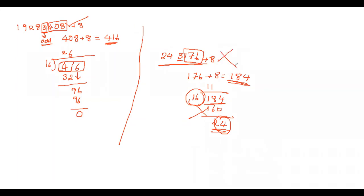In summary: if the 1000s place digit is even, the last three digits of the number must be divisible by 16. If the 1000s place digit is odd, the last three digits plus 8 must be divisible by 16. Using these rules, we can find out whether any number is divisible by 16.